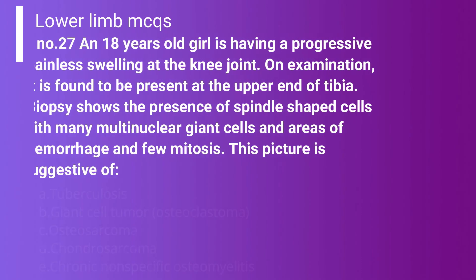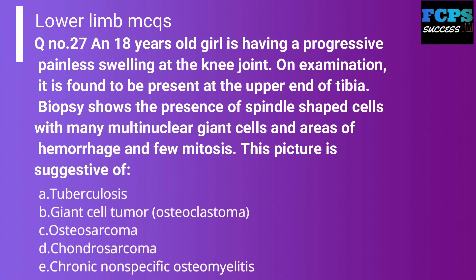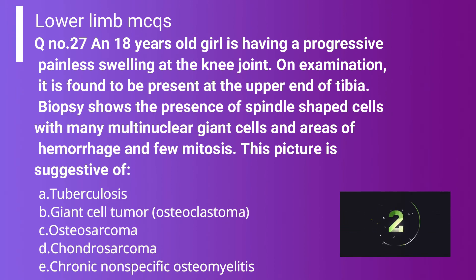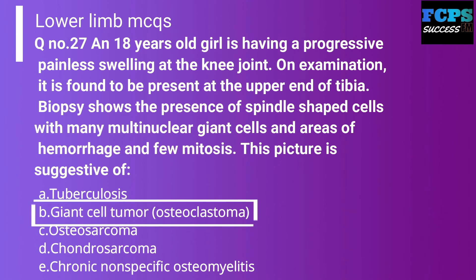Question 27: An 18-year-old girl has a progressive painless swelling at the knee joint found at the upper end of the tibia. Biopsy shows spindle-shaped cells with many multinucleated giant cells, areas of hemorrhage, and few mitoses. This is suggestive of: Option A: Tuberculosis. Option B: Giant cell tumor. Option C: Osteosarcoma. Option D: Chondrosarcoma. Option E: Chronic non-specific osteomyelitis. The correct answer is Option B — giant cell tumor (osteoclastoma). Spindle-shaped cells with multinucleated giant cells are characteristically found in giant cell tumor of the tibia.